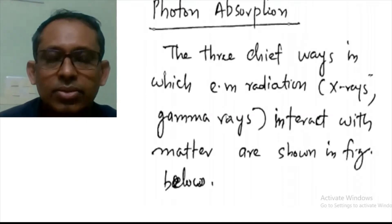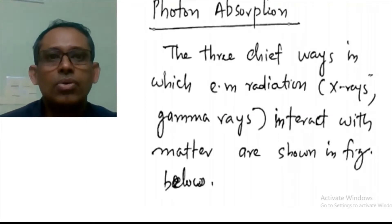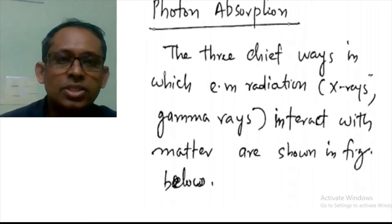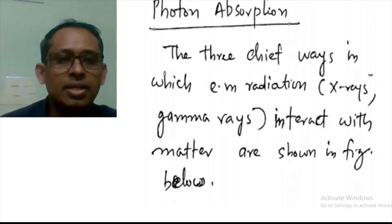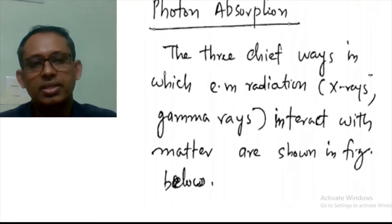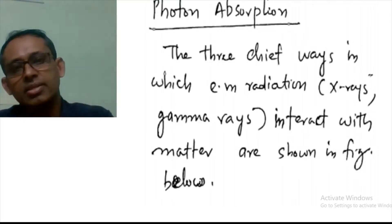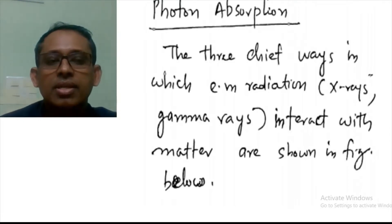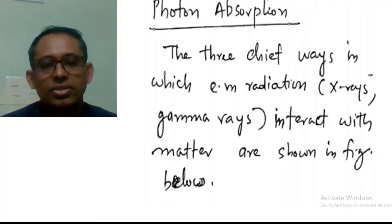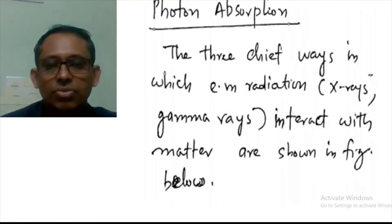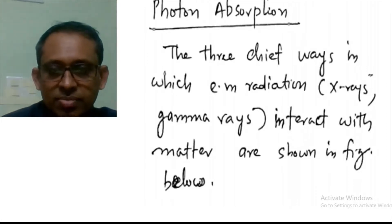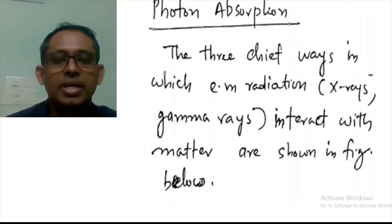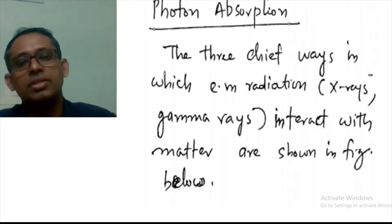Hi everybody. Today we are going to discuss photon absorption. The three chief ways in which electromagnetic radiation — mainly X-rays and gamma rays — interact with matter are shown in the figure below. They are the photoelectric effect, Compton effect, and the pair production process. These are the three chief mechanisms by which such highly energetic electromagnetic radiations or photons interact with matter.